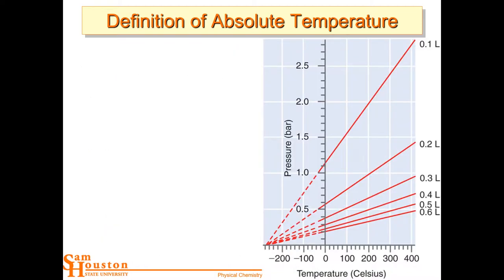Let's talk about the definition of absolute temperature. We have several temperature scales — Celsius, Fahrenheit, Kelvin. There are a few others, like one that starts with an R — Rankine or something like that — but those are the three main ones.